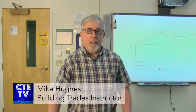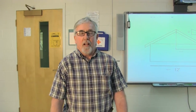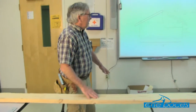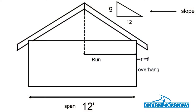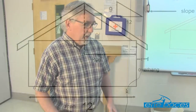Hello everybody. Today we're going to learn how to lay out a common rafter. In our example we're going to lay out a common rafter for a 12-foot wide building with a slope of 9/12. You can use this example for any common rafter layout, but in a set of plans they usually give you the width of the building, which is the span, and the slope. Those two pieces of information are all you really need to lay out a common rafter.